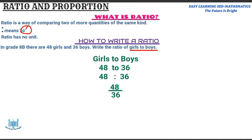Remember, you don't have to write the names of them. You don't have to write boys or girls even if you write it as a fraction. Always remember that a ratio has no unit. You just write 48 over 36 as a ratio. Basically, this is how you can write a ratio.